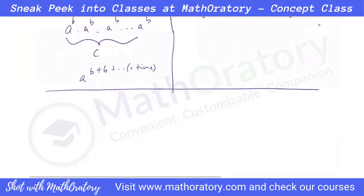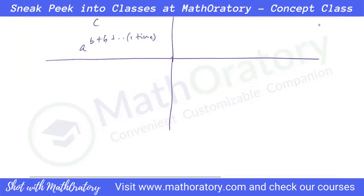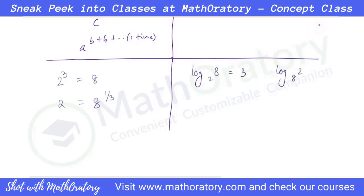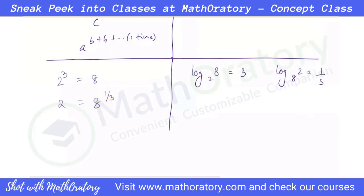Let me elaborate with an example. Two cubed equals eight, so log of eight base two is three. Then log of two base eight asks which power of eight gives two — that is obviously the reciprocal of the previous. So the property is: log of a base b will always equal one divided by log of b base a.